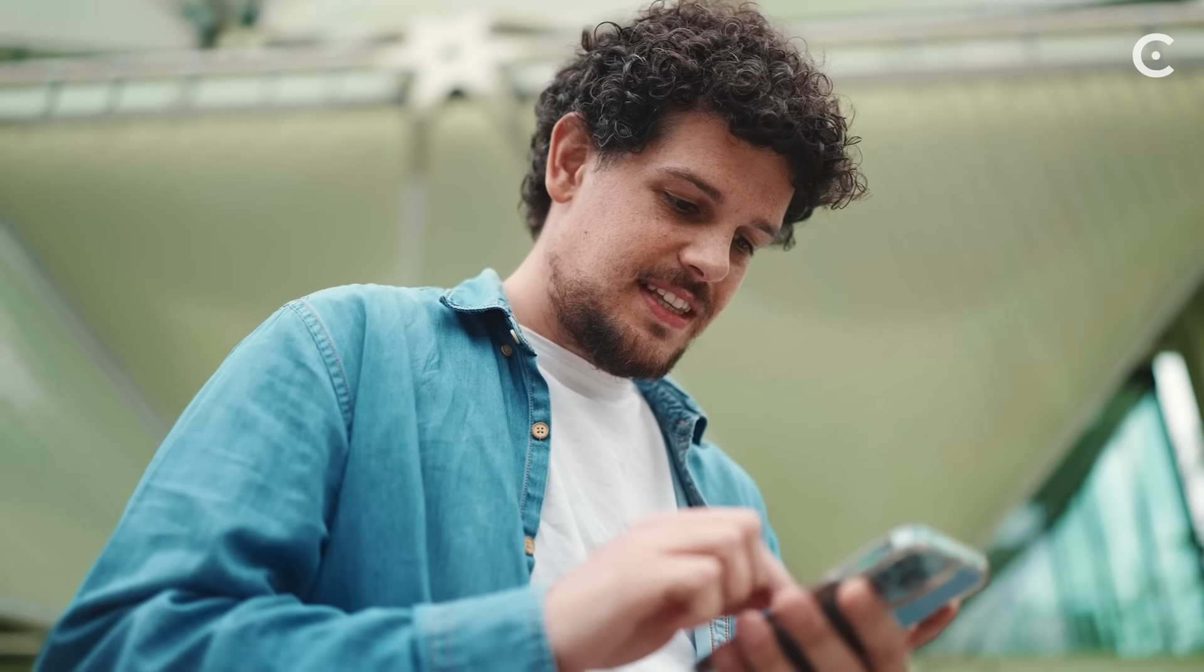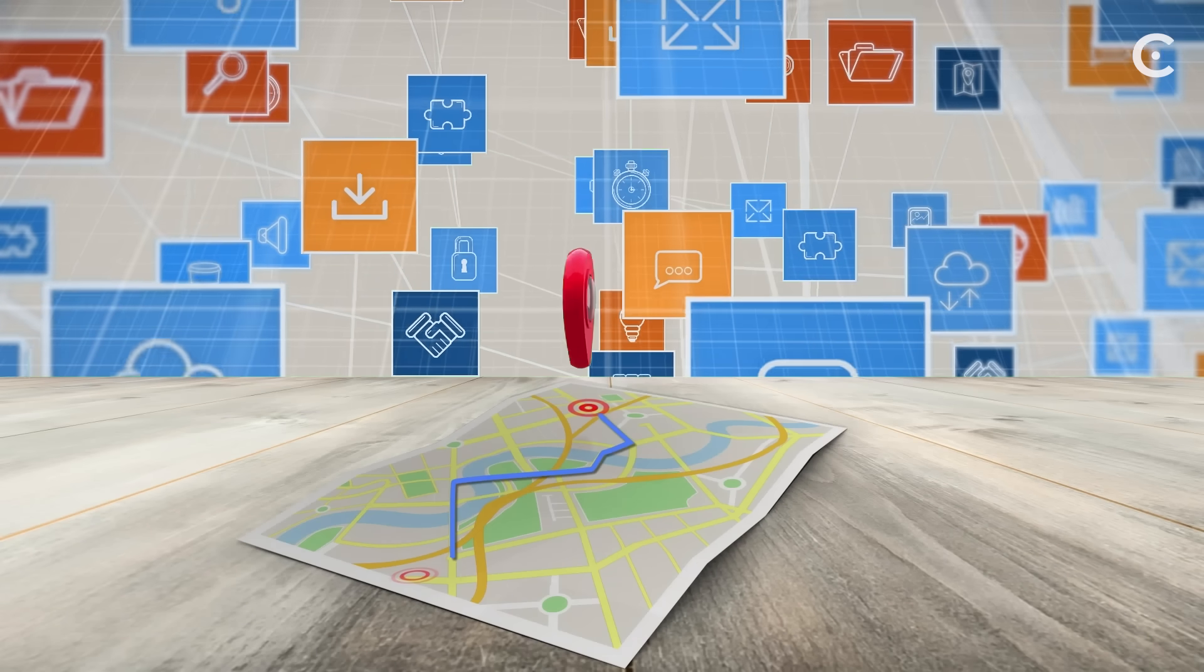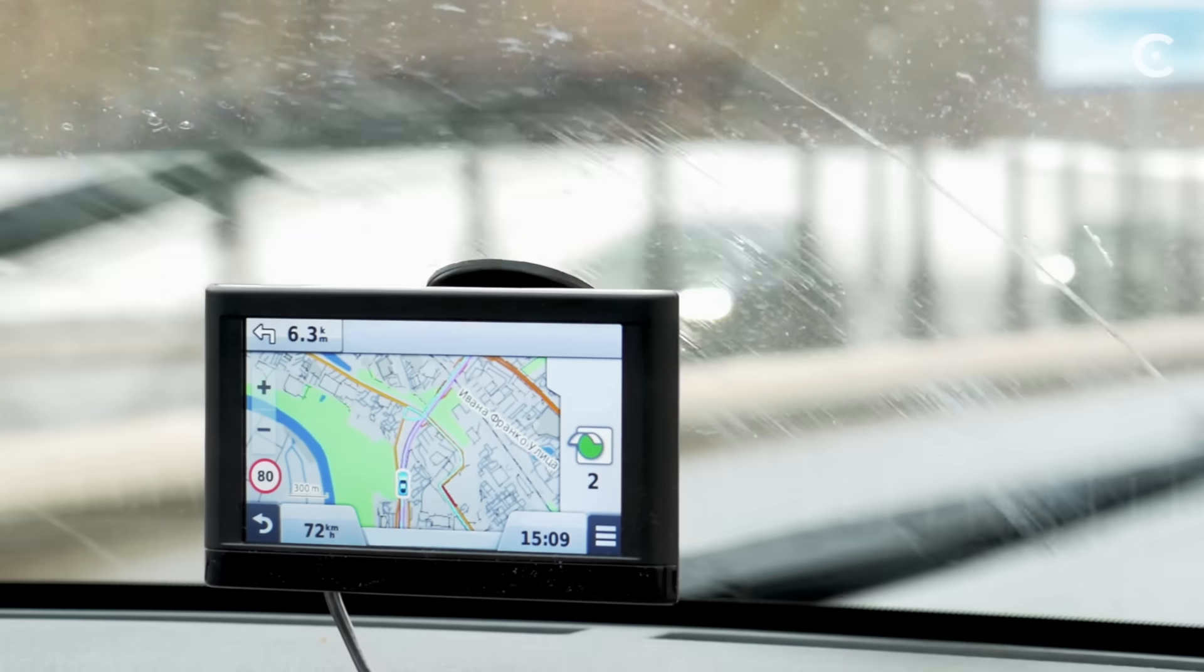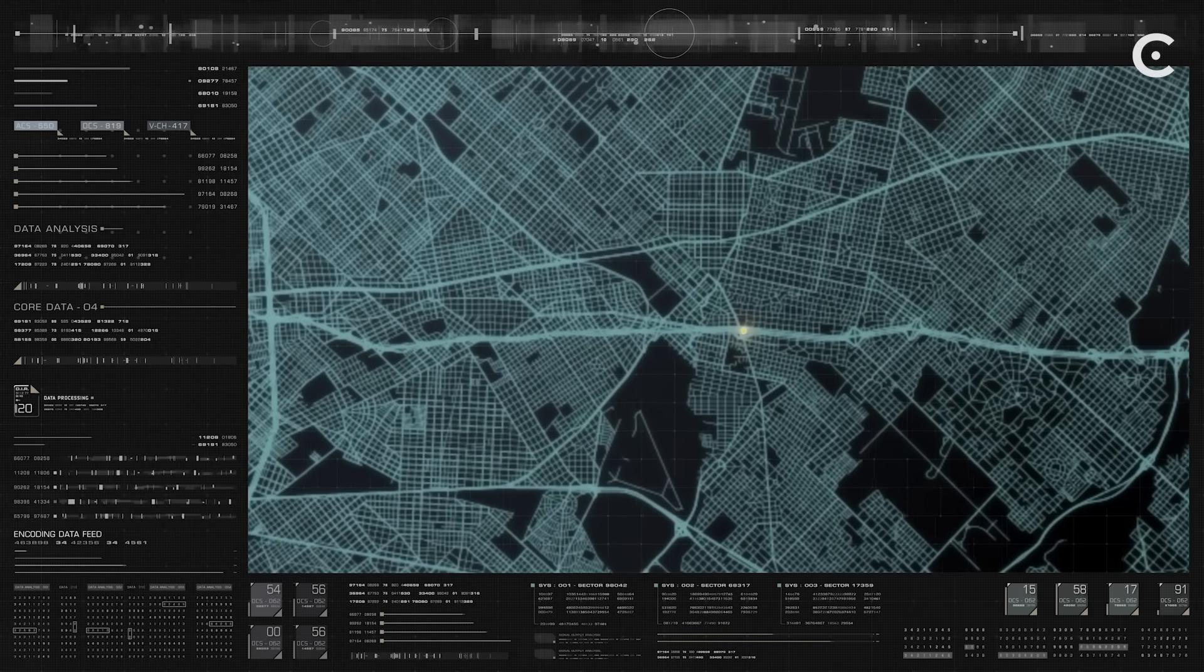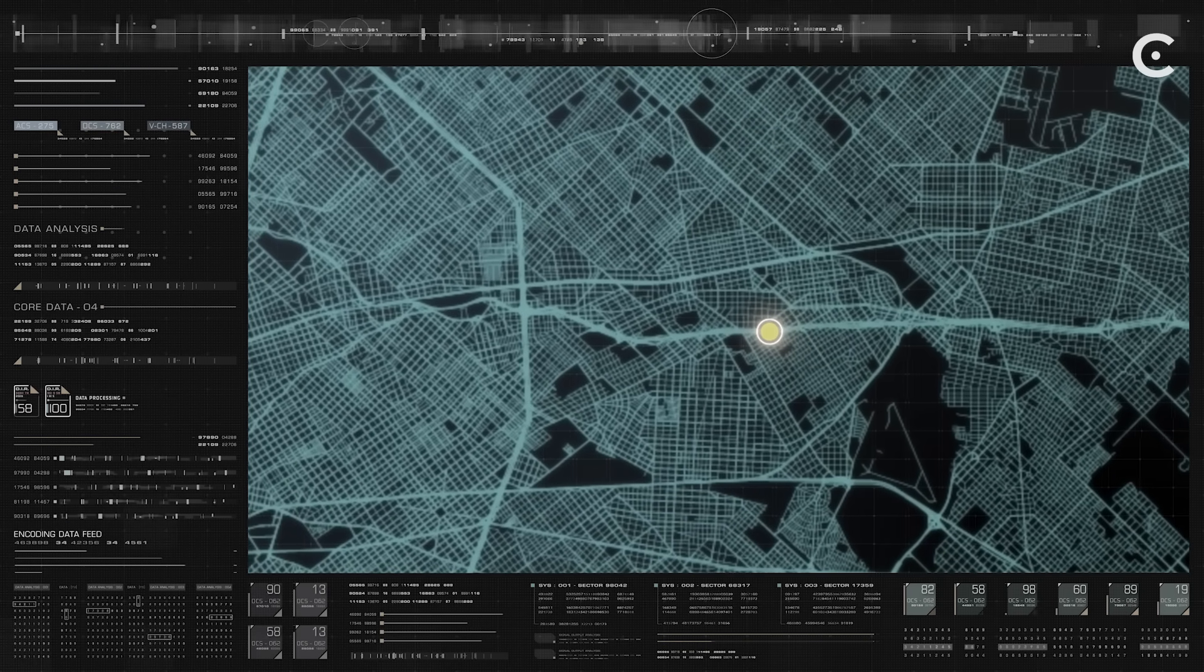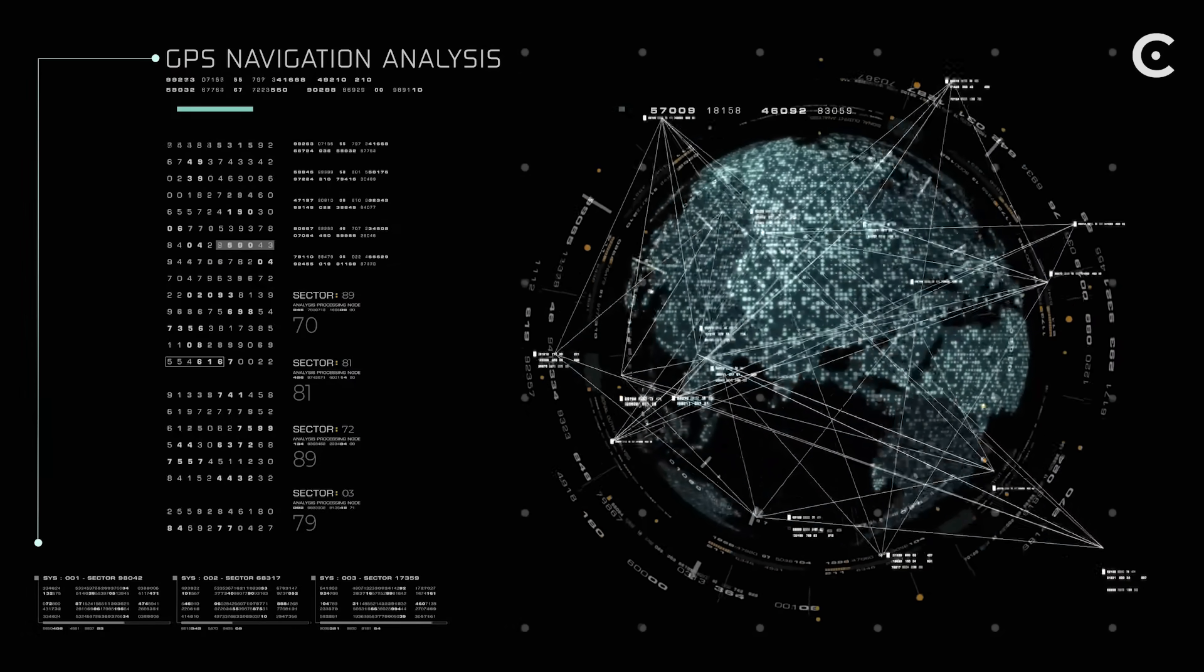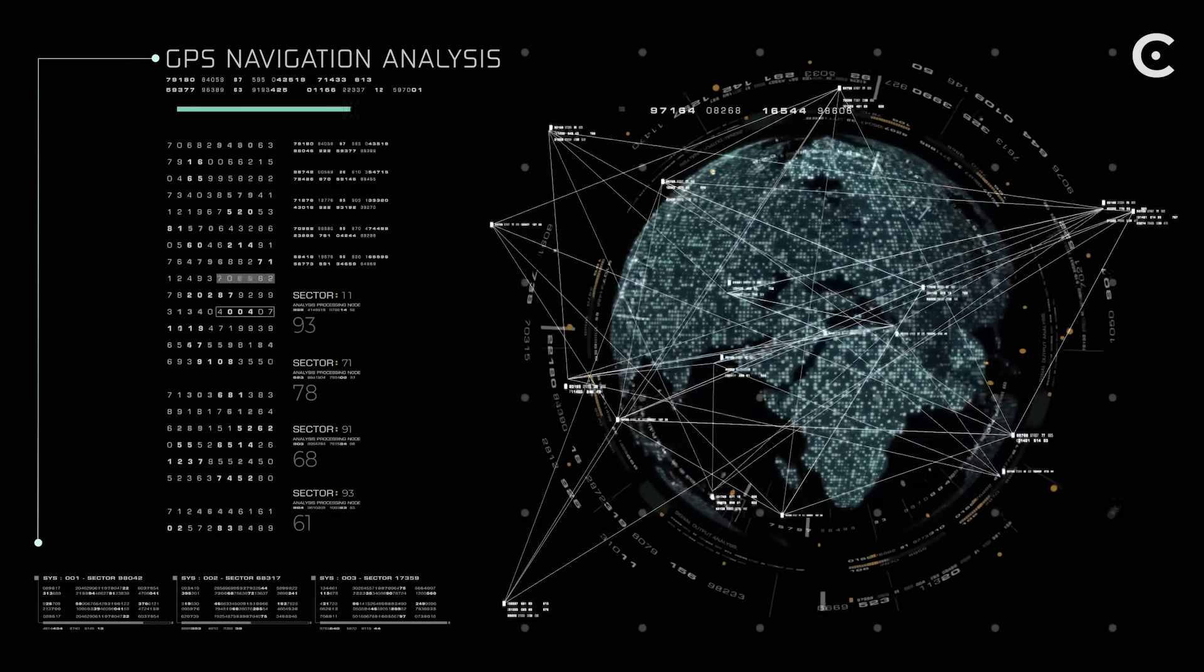Every time you use Google Maps, you're relying on Einstein's century-old insights about the nature of space-time. If Einstein had been wrong about relativity, GPS wouldn't work, and we might never have developed the precise positioning technology that enables ride-sharing, food delivery, or location-based anything. The modern economy partially runs on space-time geometry.